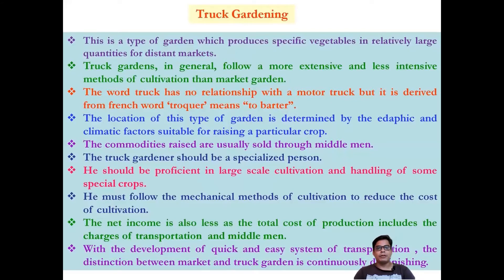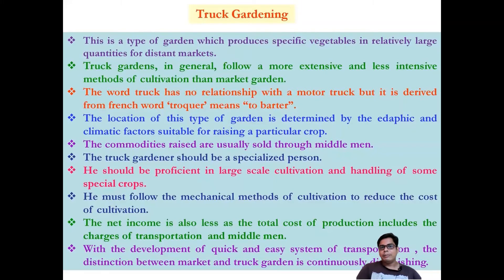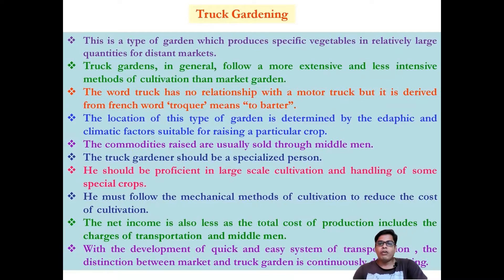Market gardening is also considered truck farming. The produce — vegetables, flowers, and other perishable goods — must be sold overnight using trucks, because these products can quickly decompose or perish. Railway transport is sometimes delayed, which would cause the vegetables to spoil. That's why trucks are used to deliver the produce overnight. Truck gardens that produce specific types of vegetables use more extensive but less intensive cultivation methods.